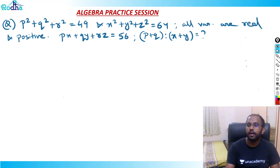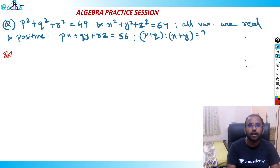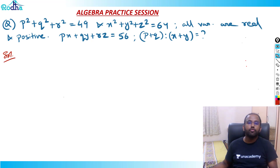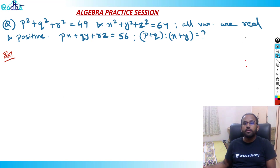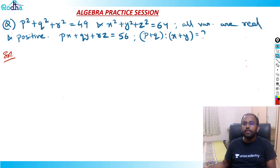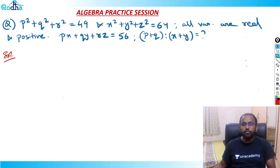Our question says that P² + Q² + R² = 49 and X² + Y² + Z² = 64. All variables are real and positive. PX + QY + RZ = 56.